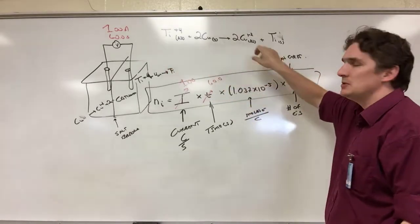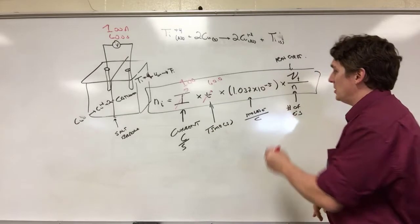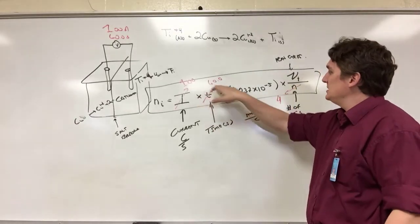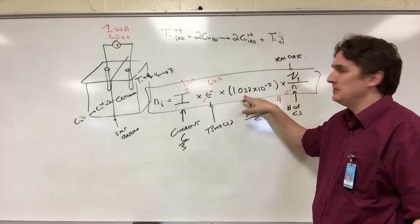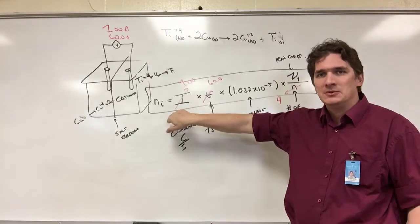The number of electrons transferred—look at the reaction. We have titanium going from plus four to zero, so that's four electrons. For copper, because this is a balanced reaction, this should always be the same. So this number for n is four. We get one times 60 times 1.037 × 10⁻⁵ divided by four. How do we find the moles of titanium and copper?